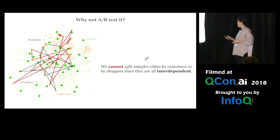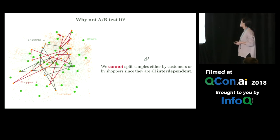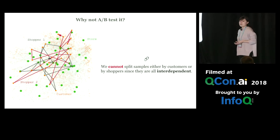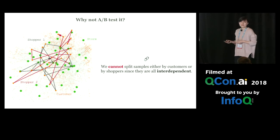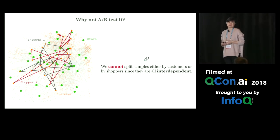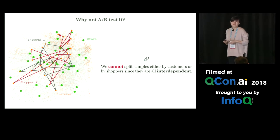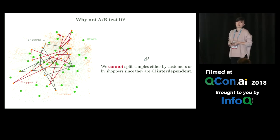But the same framework doesn't work for logistics. The problem is we cannot split samples either by customers or by shoppers because they are all interdependent. On the screen is a map of paths followed by our shoppers in San Francisco over the course of a few hours. As you can see, deliveries from different algorithm variants can be assigned to the same shopper, and what orders one shopper fulfills may impact the assignment of other shoppers.